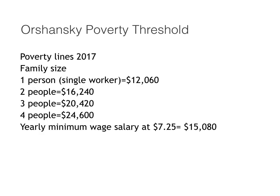We still use the Orshansky Poverty Threshold to calculate the number of families living in poverty in the United States, although we have updated the cost of food to account for inflation. This chart shows poverty lines by family size in 2017. According to the U.S. government, a single-person household is considered poor if he or she makes $12,060 a year or less. A two-person household is considered officially poor if it makes $16,240 a year or less. A yearly minimum wage salary at $7.25 an hour is about $15,080 a year — so officially, working full-time as a minimum wage worker is enough to raise one person out of poverty, but not two.